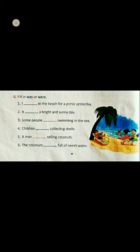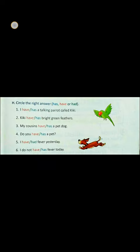Now come to the next use of 'has', 'have', or 'had'. Children, we use 'has' when we talk about one person or thing. We use 'have' with 'I' and 'you', and also when we talk about more than one person or thing. And 'had' is used to talk about things that took place in the past.